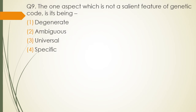Question 9. The one aspect which is not a salient feature of genetic code is its being — degenerate, ambiguous, universal, or specific? The correct answer is option 2 — ambiguous. That is the incorrect feature about the genetic code.